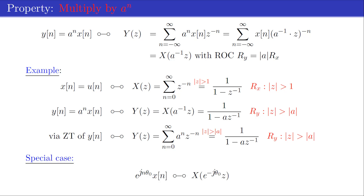Finally, as a special case, note that when x[n] is multiplied by the complex exponential e^{j n θ₀}, this corresponds to a rotation of the z-plane.